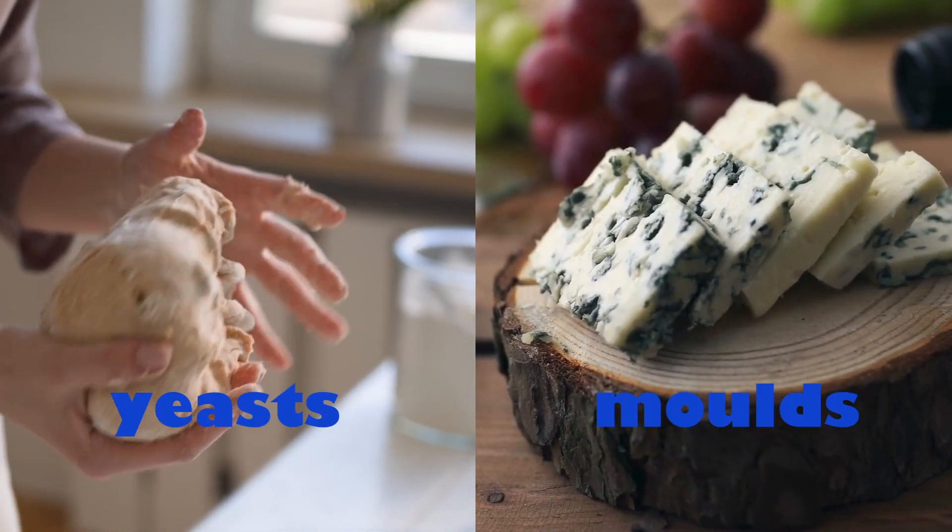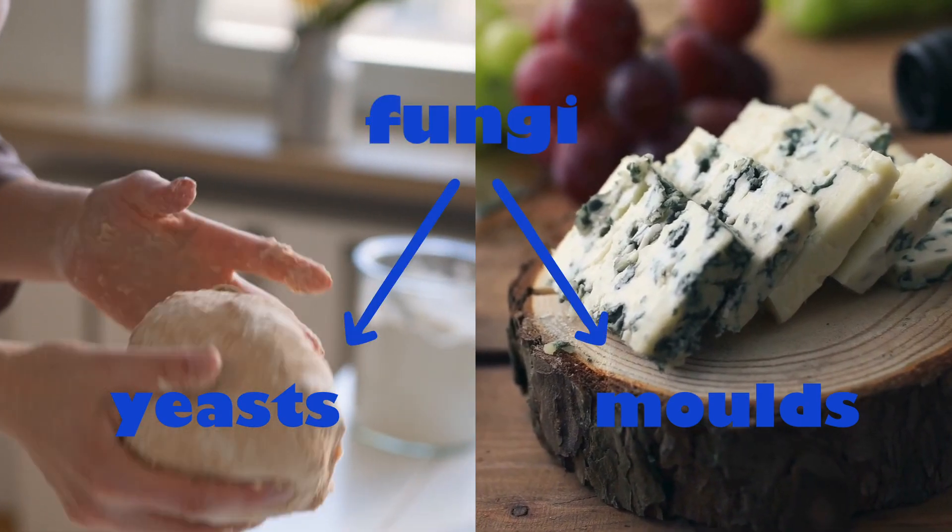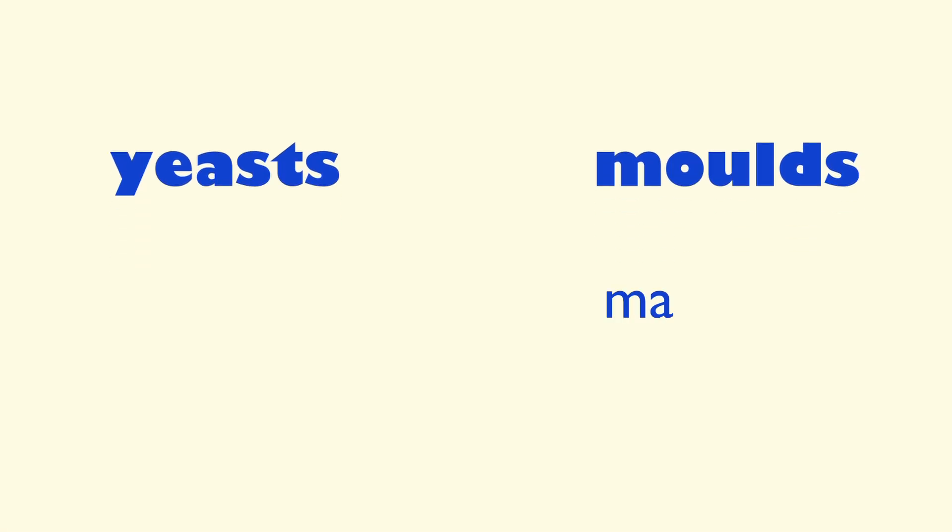And what about molds and yeasts? Well, those are different types of fungi. Molds are multicellular, formed by more than one cell, whereas yeasts are unicellular, formed by just one cell.